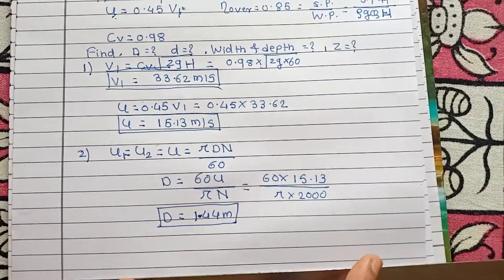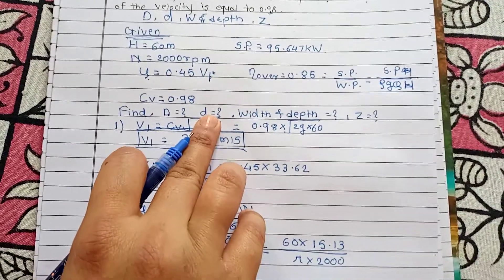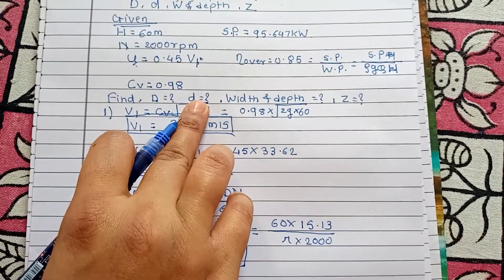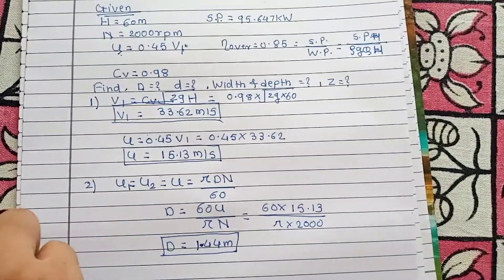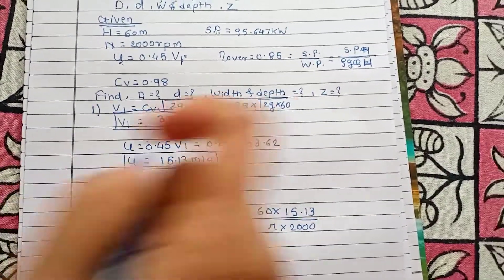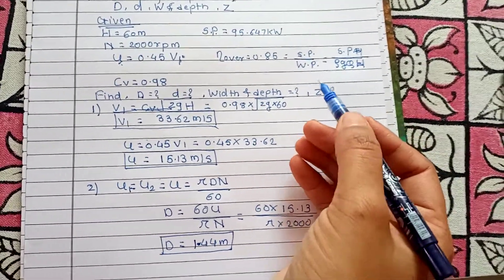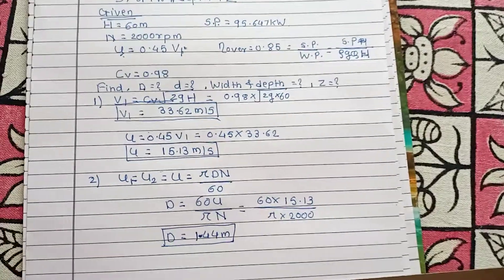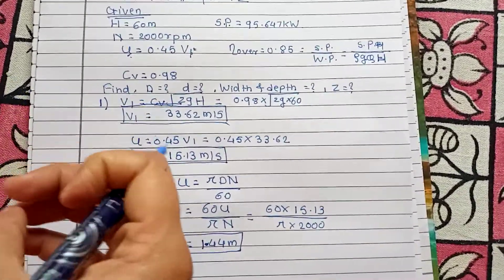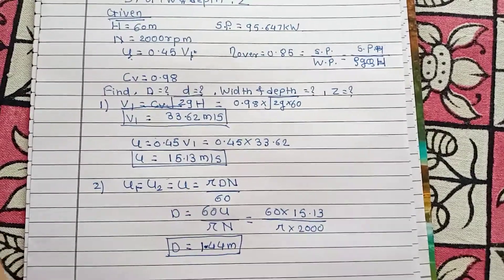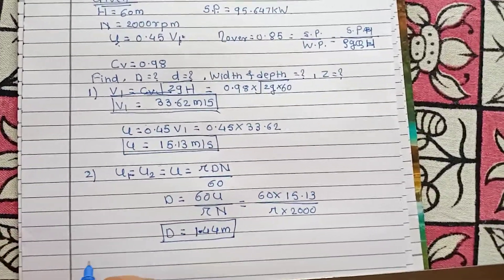Next, we find the jet diameter, small d. It appears in the area of jet formula, which in turn appears in the discharge formula via the continuity equation: Q = area of jet × velocity of jet.